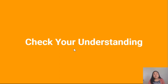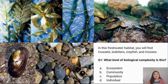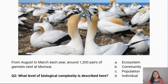Here are some questions to check your understanding. Question 1: In this freshwater habitat you'll find mussels, toe biters, crayfish, and mosses. What level of biological complexity is this? A) ecosystem, B) community, C) population, or D) individual. Question 2: From August to March each year, around 1,200 pairs of gannets nest at Mutawai. What level of biological complexity is described here? A) ecosystem, B) community, C) population, or D) individual.